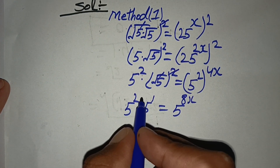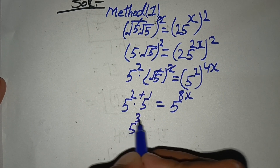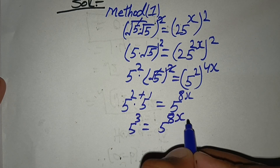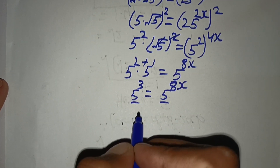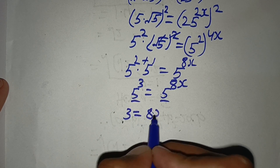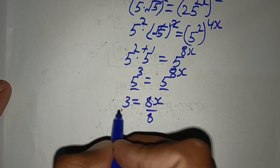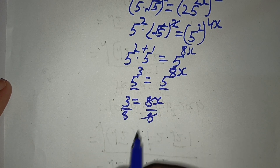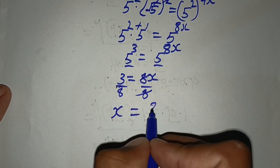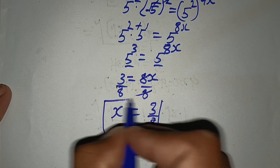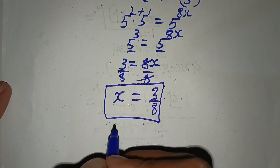Now here the power of 5 is 1. Look here, bases are same so we add their powers: 2 plus 1 equals 3, so 5 power 3 equals 5 power 8x. Since bases are same, their powers become equal, so 3 equals 8x. Dividing both sides by 8, x equals 3 by 8. This is the value of x by using the first method. Now we solve this by using the second method.